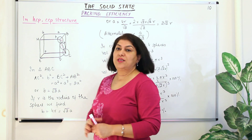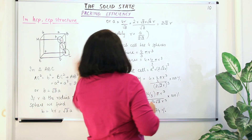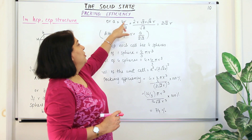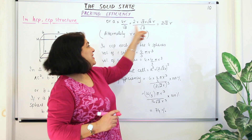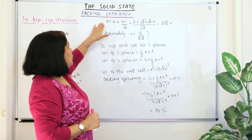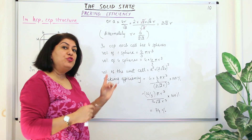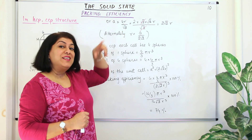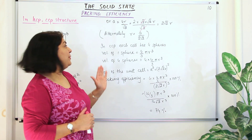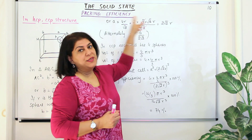From this we know that 4R = √2 · a. Rearranging, a = 4R / √2. Writing 4 as 2 × 2 and 2 as √2 × √2, one √2 cancels, leaving a = 2√2 · R. So the hypotenuse B = 4R and the edge length a = 2√2 · R. Alternatively, the radius R = a / (2√2). It is just a rearrangement of the same equation.